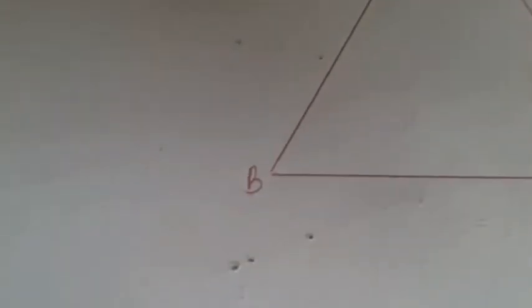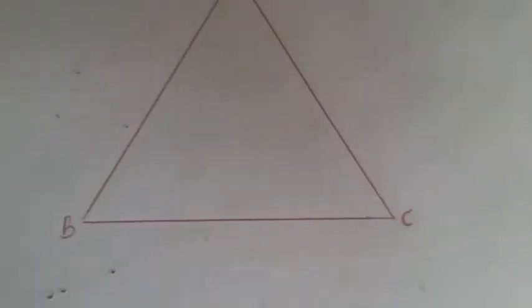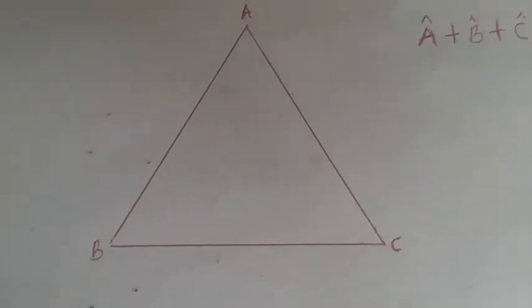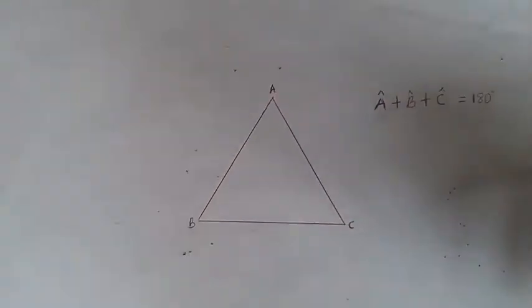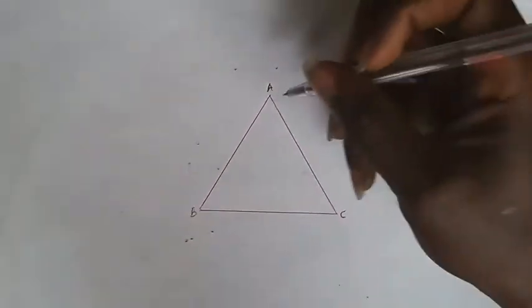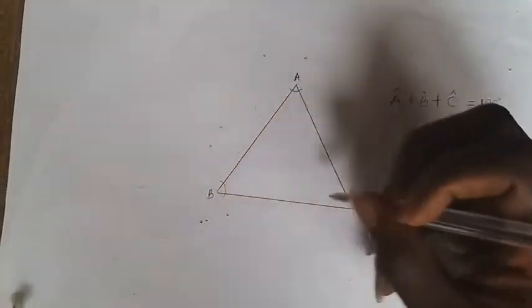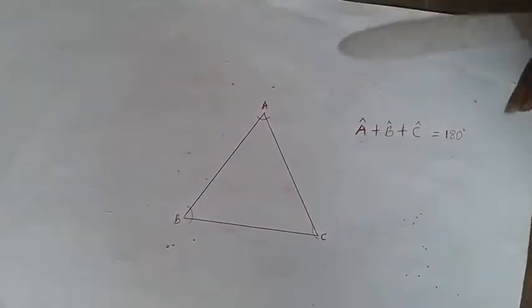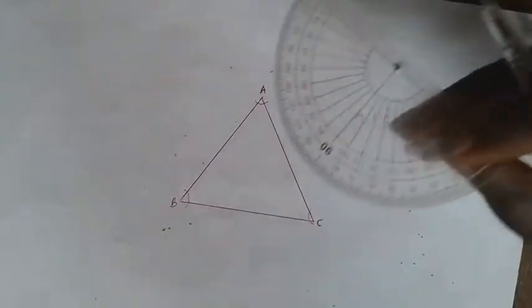So we'll be using our protractor now. We've talked about angles A, B, and C. Now I want to use the protractor to show you how you can measure these angles to verify they equal 180 degrees. You can see on my protractor, you place it on the 90 degree mark.